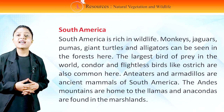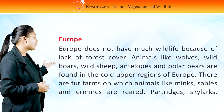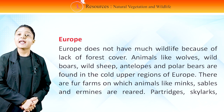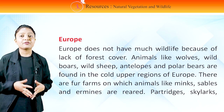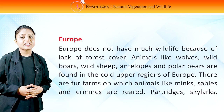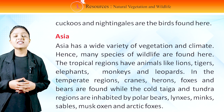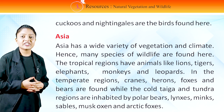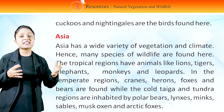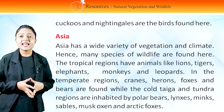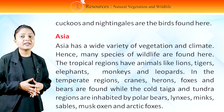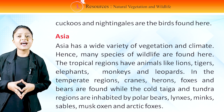Europe does not have much wildlife because of a lack of forest cover. Animals like wolves, wild boars, wild sheep, antelopes and polar bears are found in the cold upper regions of Europe. There are fur farms on which animals like minks, sables and ermines are reared. Partridges, skylarks, cuckoos and nightingales are the birds found here. Asia has a wide variety of vegetation and climate, hence many species of wildlife are found here. The tropical regions have animals like lions, tigers, elephants, monkeys and leopards. In the temperate regions, cranes, herons, foxes and bears are found, while the cold taiga and tundra regions are inhabited by polar bears, minks, sables, musk oxen and arctic foxes.